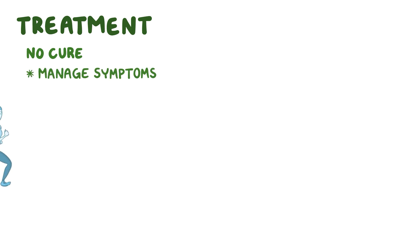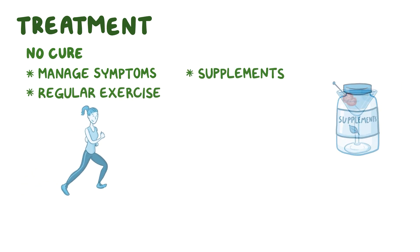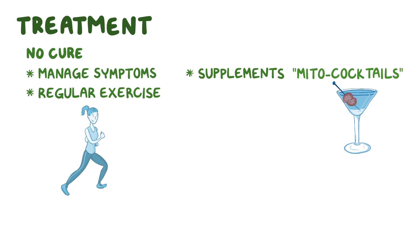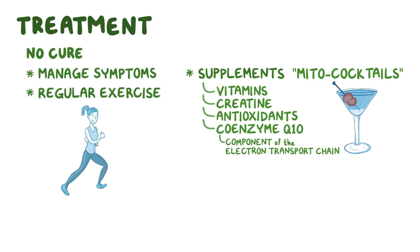While there's no cure for primary mitochondrial myopathy, there are treatment options. Supportive care can be given to help manage symptoms, and individuals may require regular exercise to improve muscle function. Supplements called mitochondrial cocktails or mitococktails, containing vitamins, creatine, antioxidants, and coenzyme Q10 — which is a component of the electron transport chain — can be given to improve mitochondrial activity.